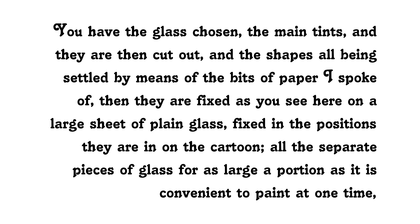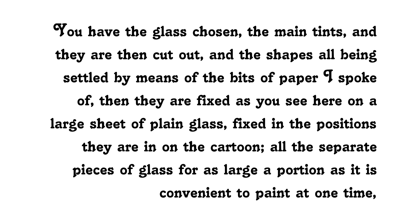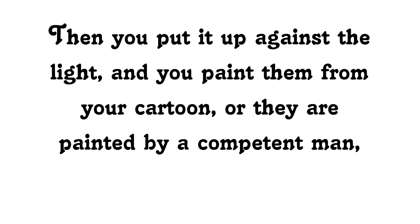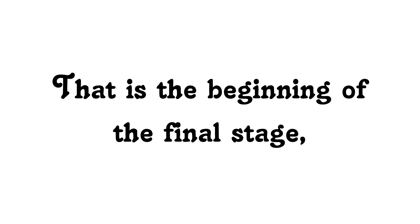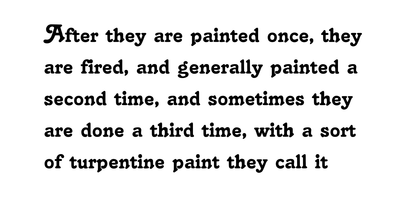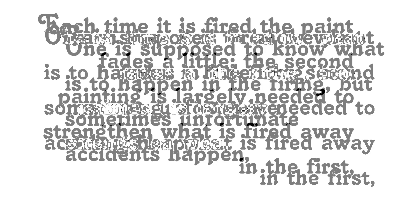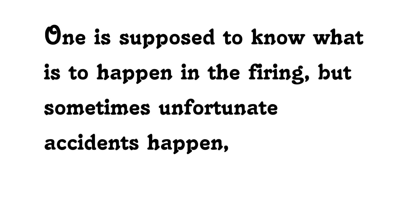Then they are fixed on a large sheet of plain glass in the positions they are in on the cartoon — all the separate pieces of glass for as large a portion as it is convenient to paint at one time. Then you put it up against the light and paint them from your cartoon. That is the beginning of the final stage. After they are painted once they are fired, and generally painted a second time, and sometimes done a third time. Each time it is fired the paint fades a little; the second painting is largely needed to strengthen what is fired away in the first. After it is all painted, the leads are put round these pieces, they are cemented together, and that is the window finished for fixing.